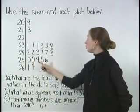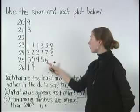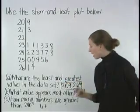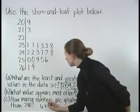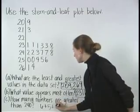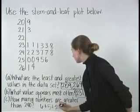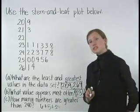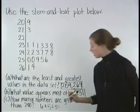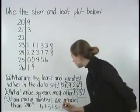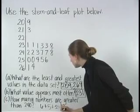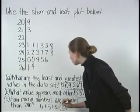There are 1, 2, 3, 4, 5 leaves on stem 25, and 2 leaves on stem 26. 6 plus 5 plus 2 is 13. So there are 13 numbers in our data set which are greater than 240.